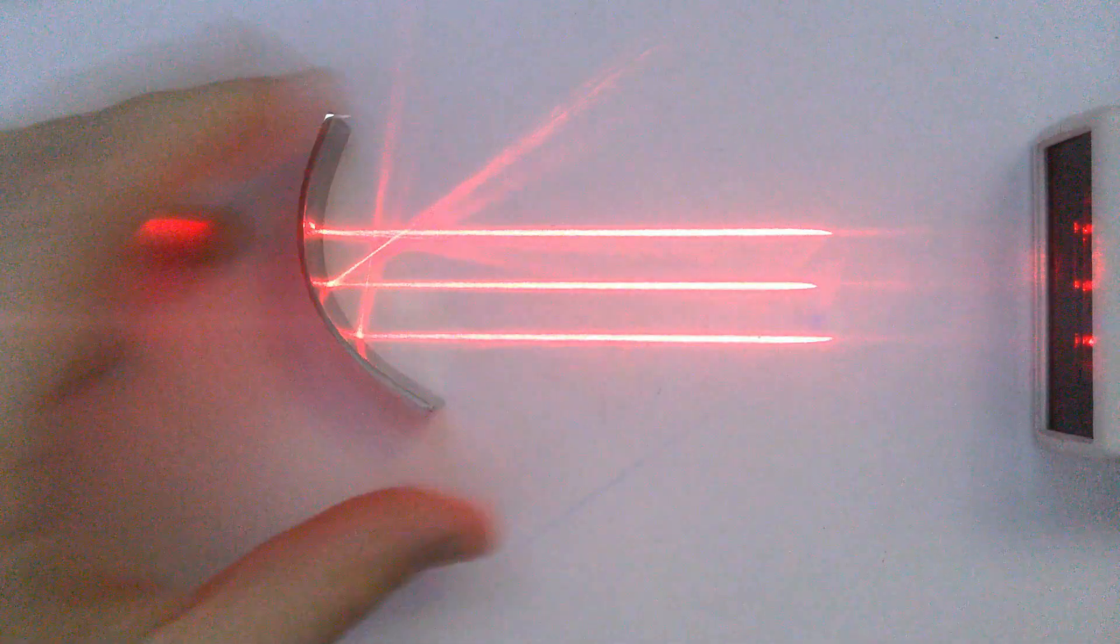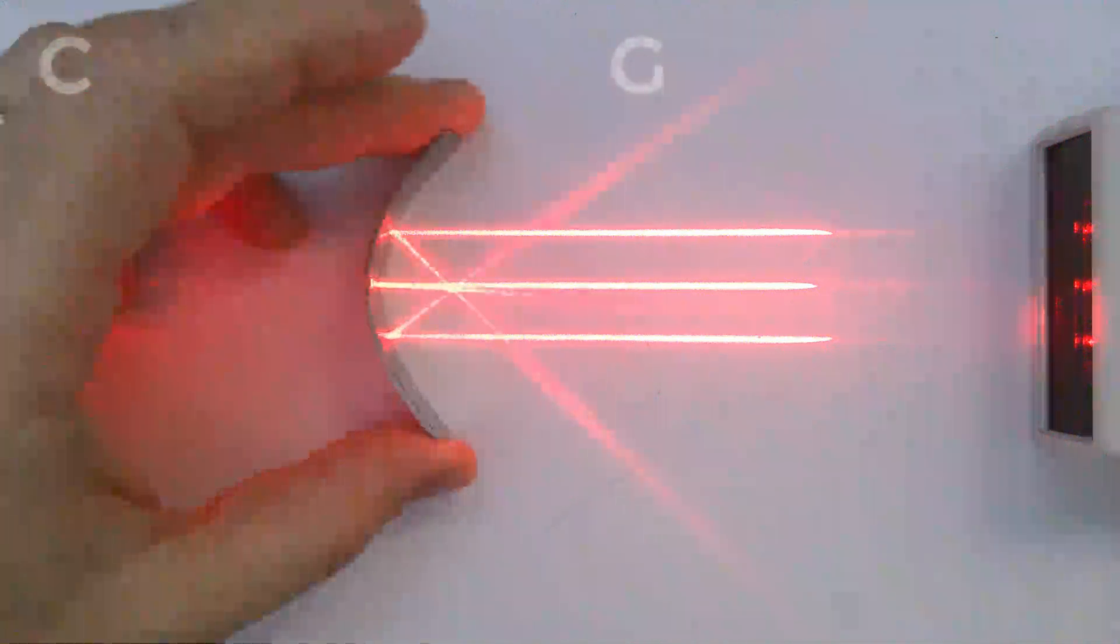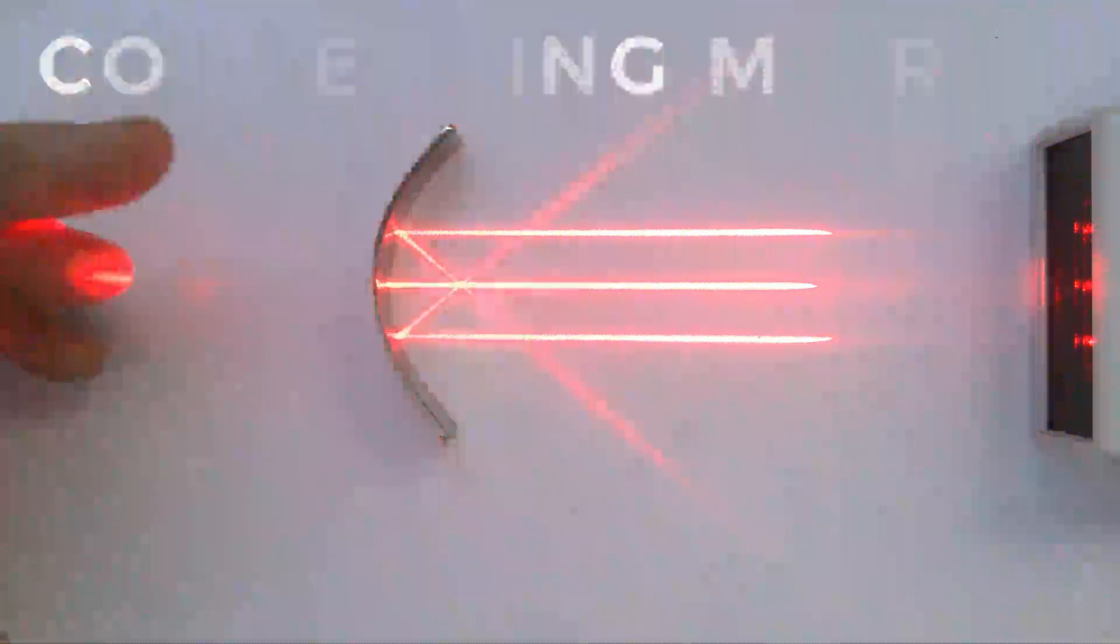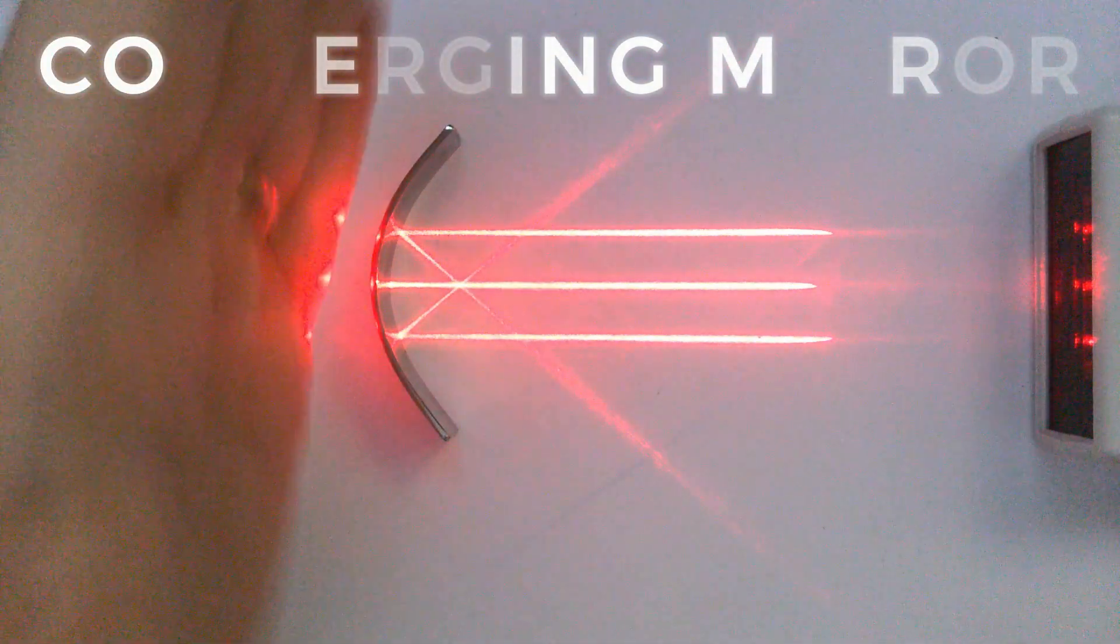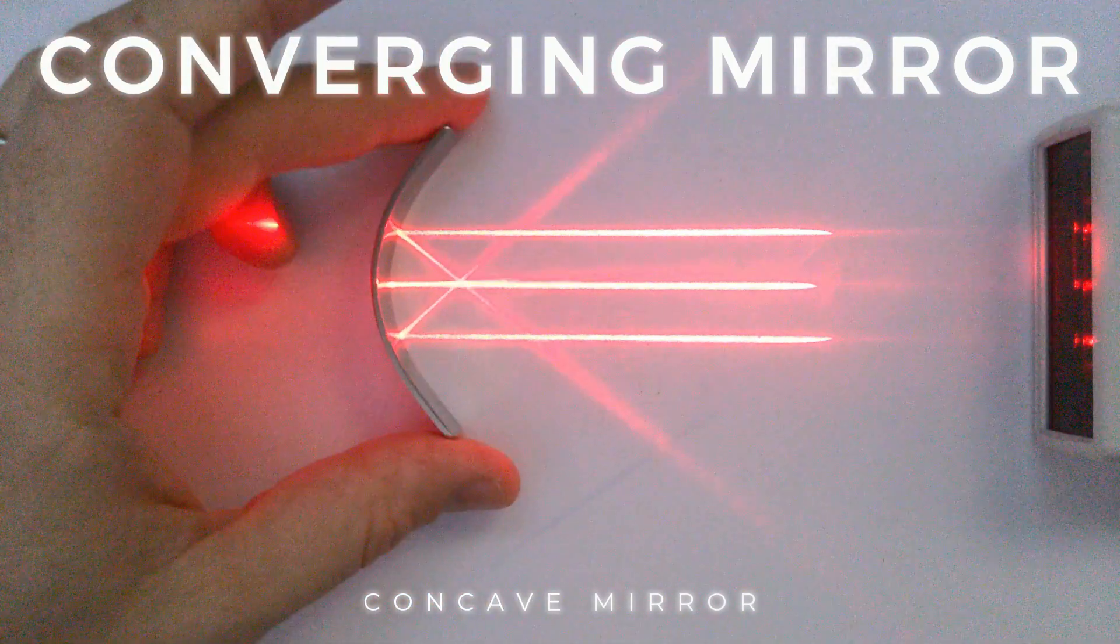So when I've got three rays of light, you can see here that they are all converging or meeting at the same point. Now this is when it's a perfectly curved mirror, you can see when I move it off, they go a bit all over the place. This is because it's not a perfect circle.